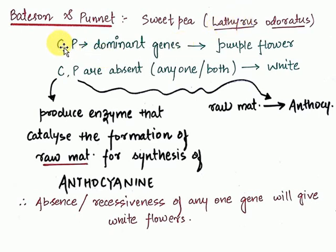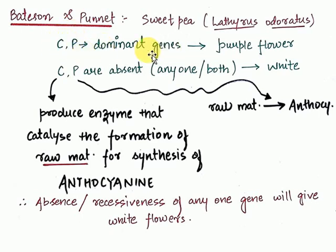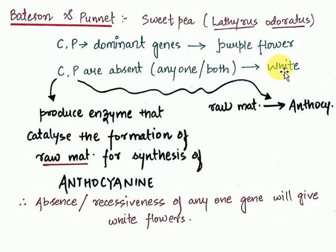There are two genes: C and P. If they are capital, they are dominant. So if both C and P are dominant — that is, if they are complementing each other — the flower will be of purple color. But if even a single C is recessive, or a single P is recessive, or both are recessive, the plant is going to be white. If even one from C or P is recessive, there will be no expression of purple color.